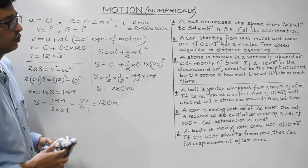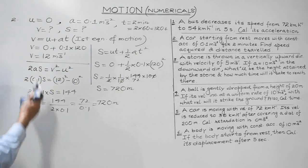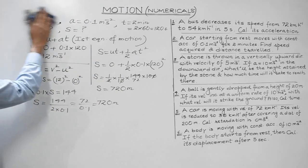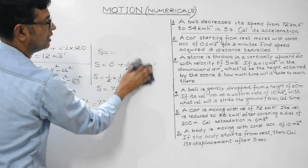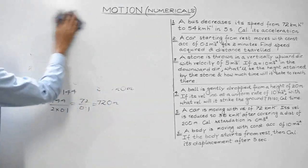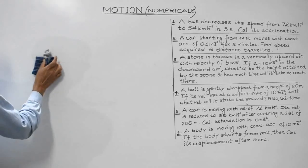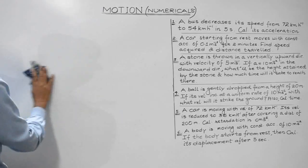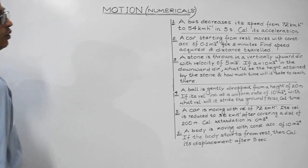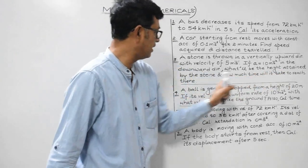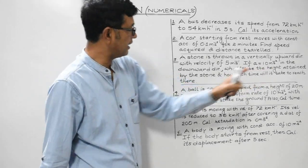The third question is quite interesting. A stone is thrown vertically upward with a velocity of 5 m/s. If acceleration is 10 m/s² in the downward direction, what will be the height attained by the stone and how much time will it take to reach there?